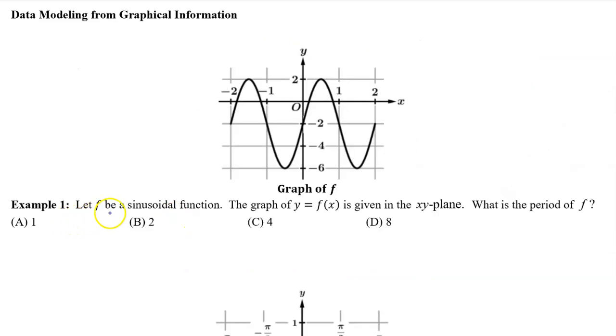Example 1: Let f be a sinusoidal function. The graph y equals f is given in the xy plane. What is the period of f? The period of the function is the horizontal distance from peak to peak. However, these peaks are between the lines, so it's a little bit difficult to calculate. One period of this function also begins at 0 and ends here at 2. Therefore, the period is 2, and the answer is B.